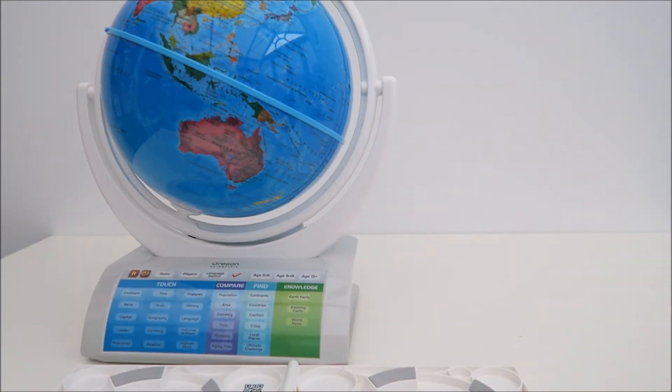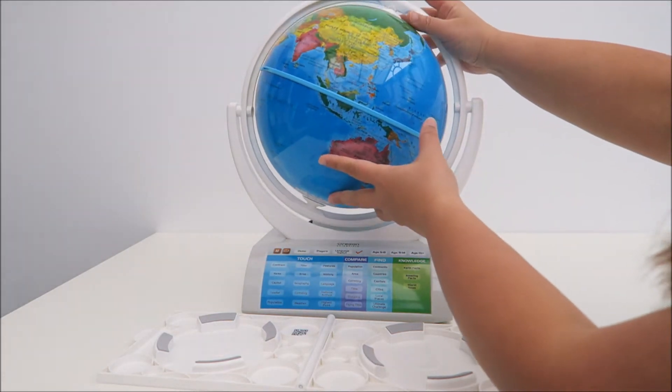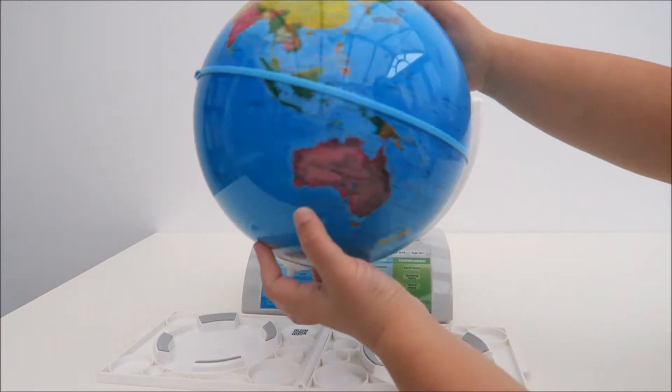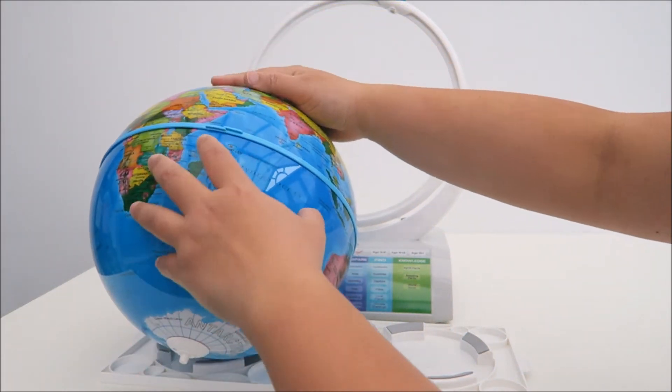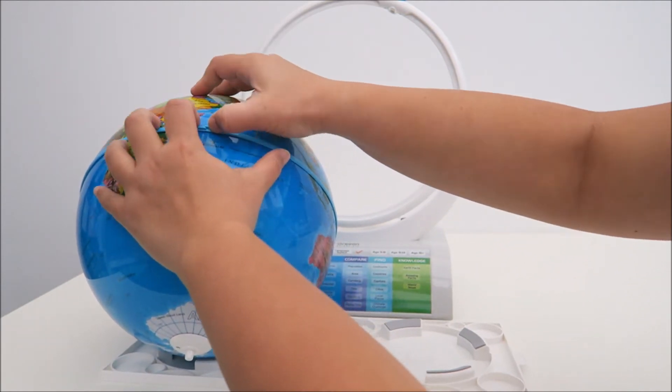Let's put it down flat. To remove this globe, it's really, really simple. Just press the top here to release the globe here and then you just need to open it up. So over here, there's these two holders for you to open it up.